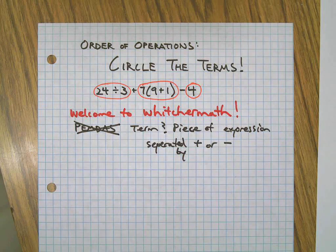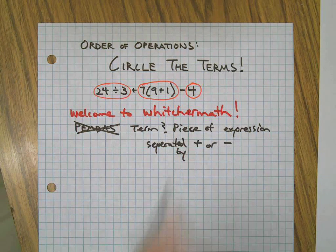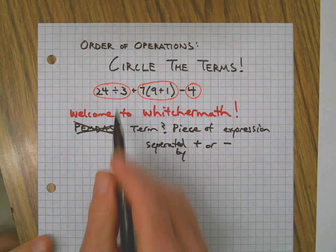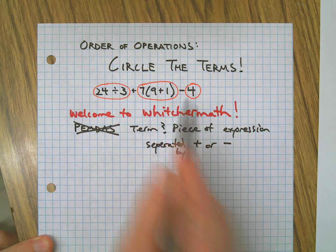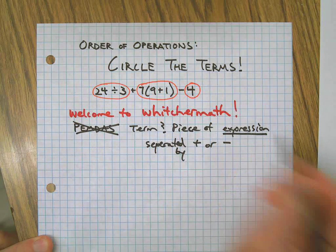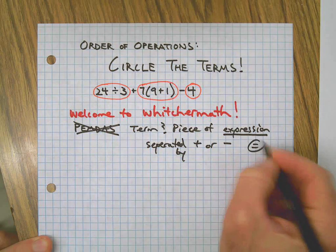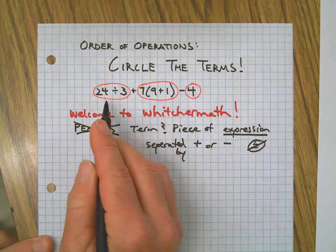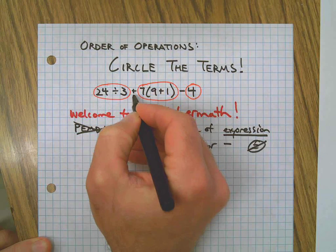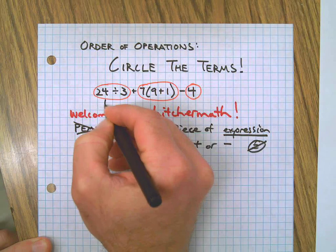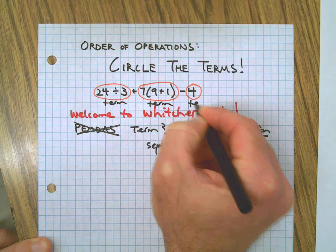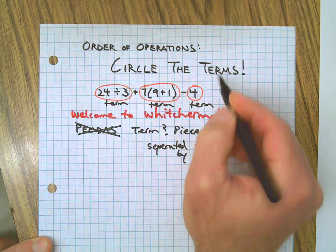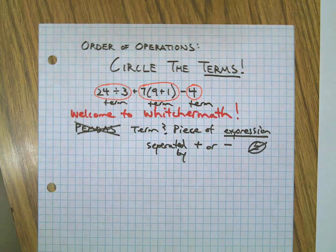Today we're just going to deal with numbers, so we're looking for pieces of an equation. If you look at our example up here, actually this is an expression because there's no equal sign. The pieces are separated by addition and subtraction signs, so here's a term, here's a term, and here's a term.